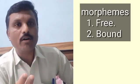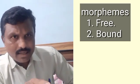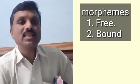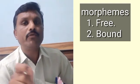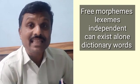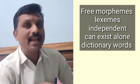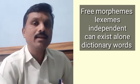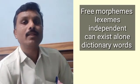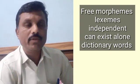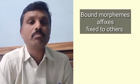There are two types of morphemes: free morphemes and bound morphemes. Free morphemes are lexemes — they are independent words that can stand on their own, have meaning in the dictionary, and can be found there. All the words we see in the dictionary are examples of free morphemes.